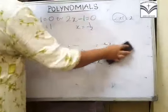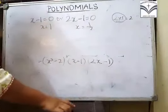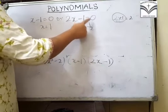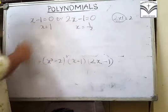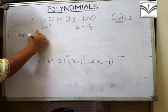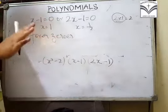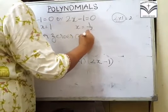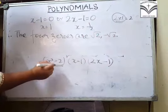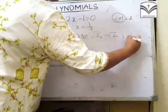Samajh mein aaya? Kyunki 0s kaise milega — in dono factors ko bhi 0 se equate karoge. So x - 1 = 0 aur 2x - 1 = 0. 1 goes this side: x = 1. Yahan 1 idhar aaya aur 2 denominator mein gaya: x = 1/2. So what are the 4 zeros? The 4 zeros are: question mein already 2 zeros diye the — root 2 and minus root 2. Un dono ko combine karne se hi yeh mila tha. Baaki 2 find karne ko bole the — to kya mila: 1 and 1/2.